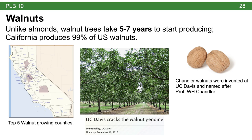In some places in Yolo County, you can find walnuts and almonds growing side by side, but there are some important differences. Unlike almonds, walnut trees take about five to seven years to start producing. California produces 99% of all US walnuts in just five counties: Butte, Sutter, San Joaquin, Stanislaus, and Tulare. UC Davis has a long history with walnuts — first with the Chandler walnut, invented on campus and named after Professor W.H. Chandler — and in 2015, UC Davis was the first place to sequence the whole walnut genome.